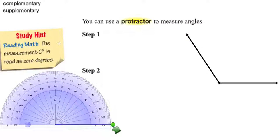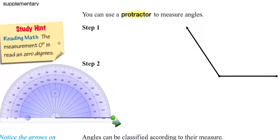We can use a protractor to measure an angle. To measure an angle, let's do two steps. Step number one — this is your protractor right here. You can also do this at home, so it'll be better for you to have a protractor and a piece of paper and copy this angle in your notebook so you can do this with me for a better understanding.